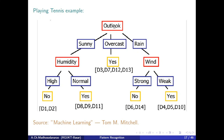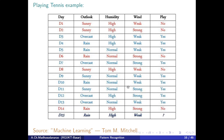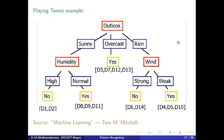Looking at all overcast cases in the data, in every overcast case I will play tennis. This gives us a pure label — this is a leaf node with all samples corresponding to overcast giving 'yes'. There is no combination of yes and no.